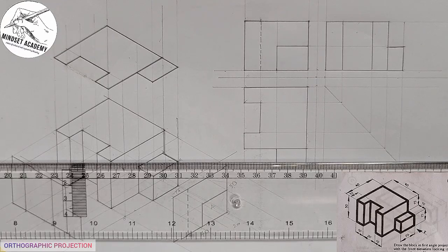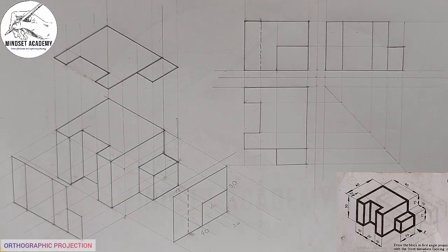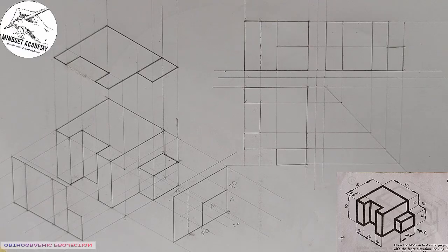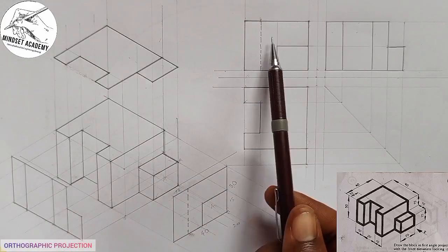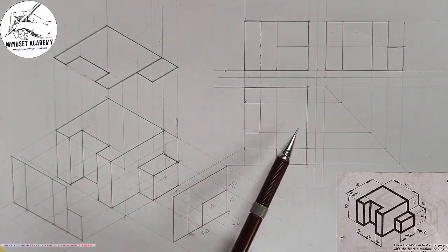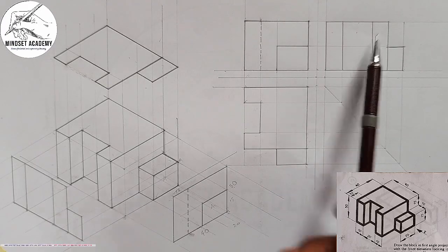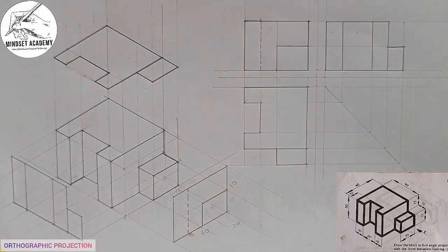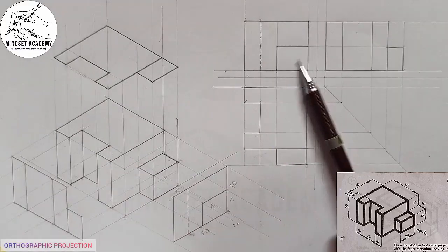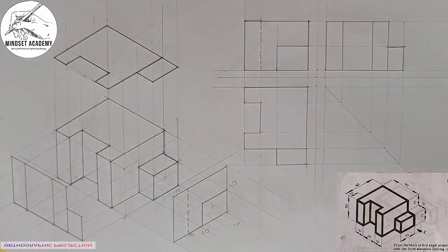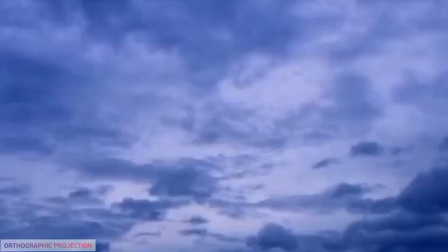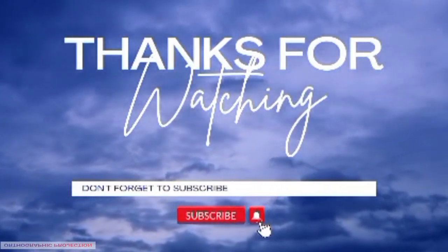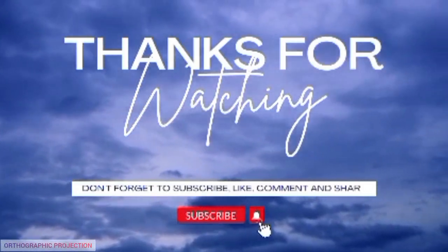We have successfully reproduced the figure in first angle projection. This is the front elevation, this is the plan, and this is the end view. This is how you have to draw — I was drawing this to show you what you are going to see when you are looking at it in different directions. If you found this video helpful, please don't forget to like, subscribe, comment, and share the video. Thanks for watching.